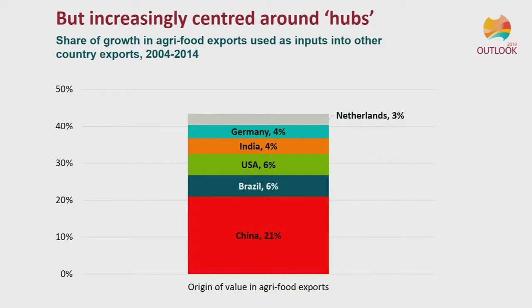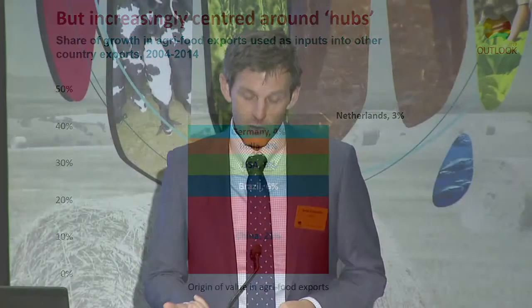At the same time, we're seeing concentration in different parts of the market, with the evolution of hubs in global value chains across the world. In particular, we see these hubs occurring around China and Europe, mainly Germany within Europe. China is the most active player in global value chains, both as a seller of inputs into other countries' exports — in terms of those forward relationships — and as a buyer of produce for use in its own exports. Between 2004 and 2014, China was responsible alone for 21% of the total growth in global value chain trade, and the top six countries account for almost 45% of that growth.